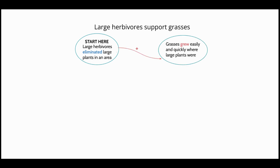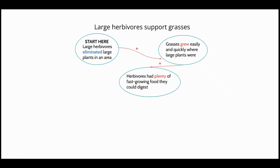When large plants are eliminated, grasses can quickly and easily grow to take their place. Grasses are relatively easy for many herbivores to digest and grow back quickly when an area is cleared. This provides more food for herbivores, so herbivores that can eat grass therefore increase in number.